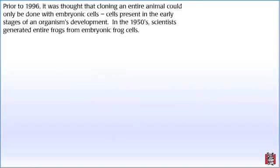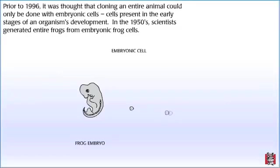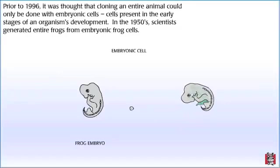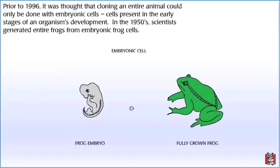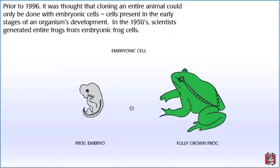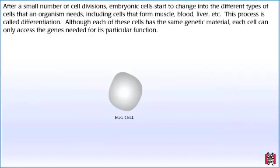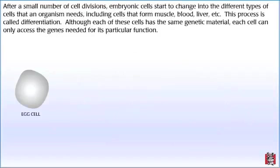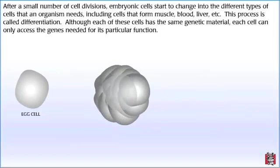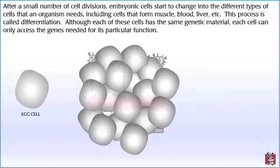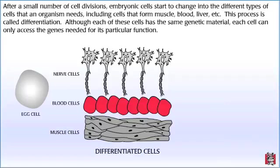Prior to 1996, it was thought that cloning an entire animal could only be done with embryonic cells — cells present in the early stages of an organism's development. In the 1950s, scientists generated entire frogs from embryonic frog cells. After a small number of cell divisions, embryonic cells start to change into different types of cells that an organism needs, including cells that form muscle, blood, liver, etc. This process is called differentiation.